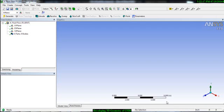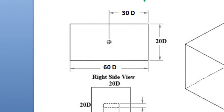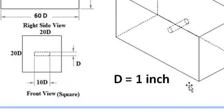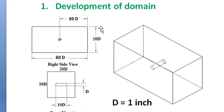Now we will develop a 3D domain for the simulation. As we can see from the previous problem, we have this flow over cylinder problem. The domain is based on the cylinder diameter d, which is 1 inch. The length of the domain is 60d, the width is 20d, and the length of the cylinder is 10d. We will draw this 3D domain in the ANSYS geometry module.